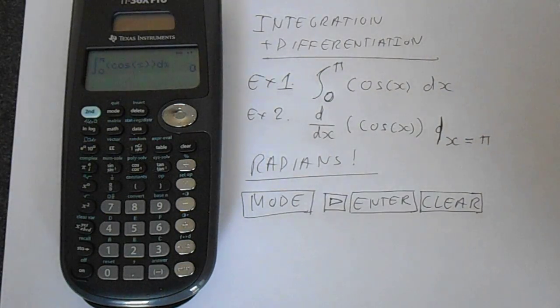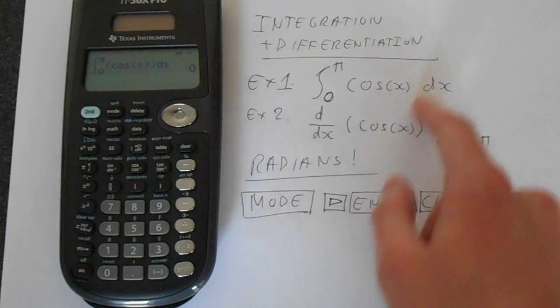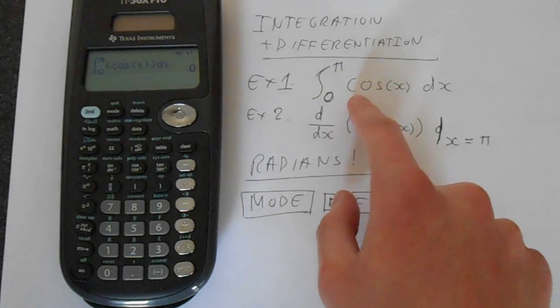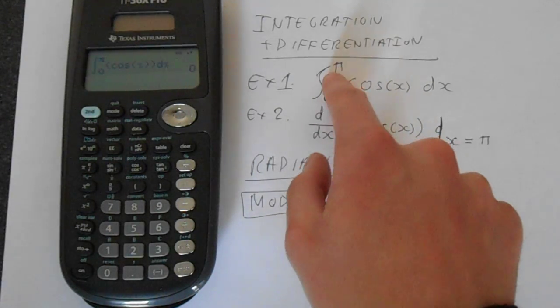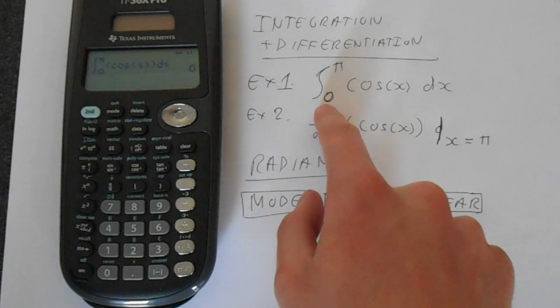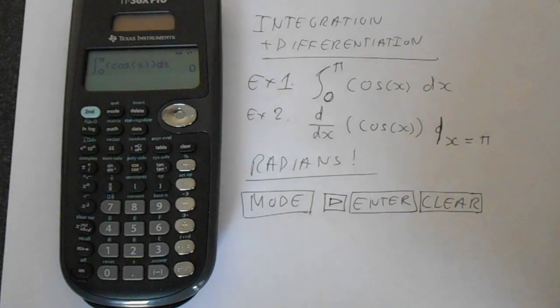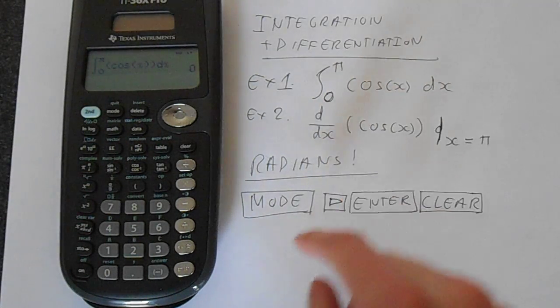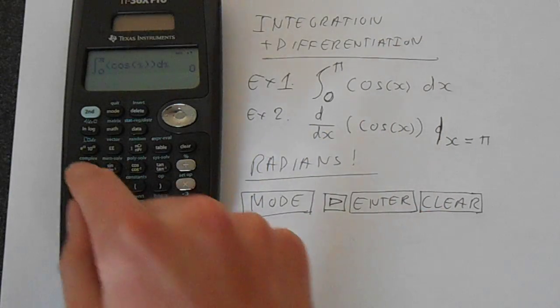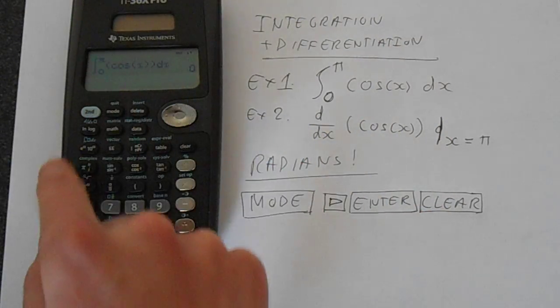We get zero, which should be very obvious. You're getting sine of pi which is zero minus sine of zero which is zero. That's no surprise there. Now we can move to the next example.